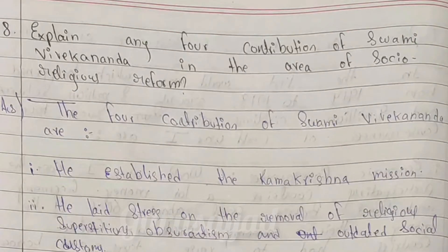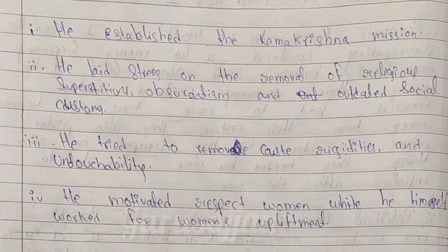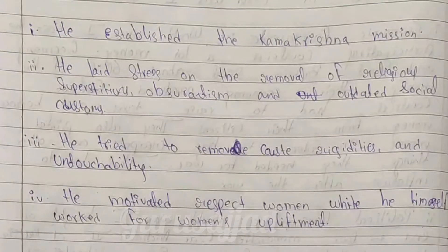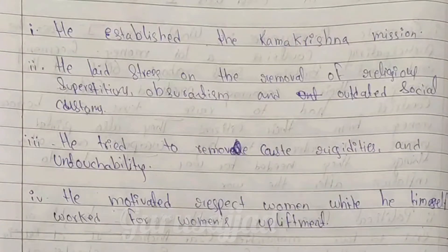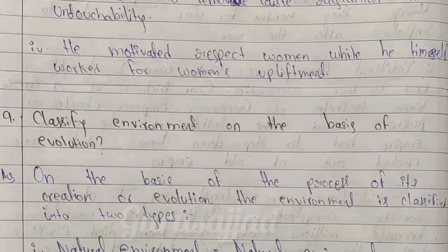Explain any four contributions of Swami Vivekananda in the area of social-religious reform. He established the Ramakrishna Mission. He laid stress on the removal of religious superstition, obstinacy and outdated social customs. He worked to remove caste rigidity and untouchability. He also motivated and respected women while working for women's upliftment.